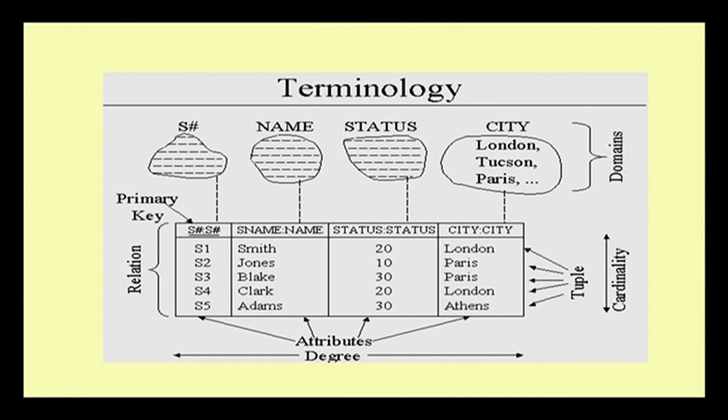The number of attributes gives the degree of the relation, and the number of tuples gives the cardinality. Each attribute has a domain associated with it — for example, status, name, number, and city.